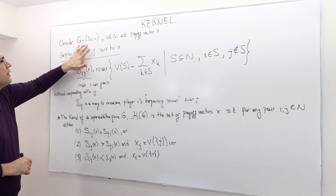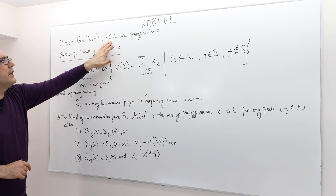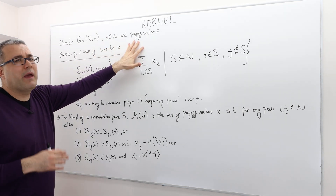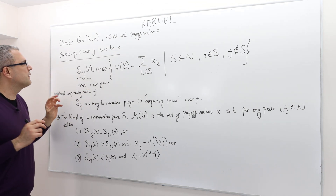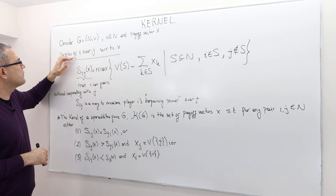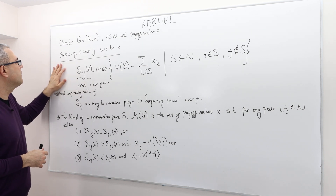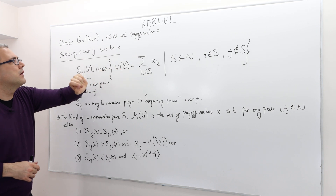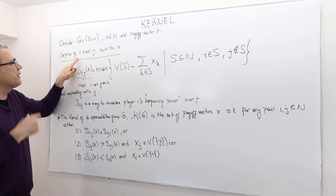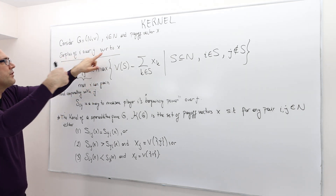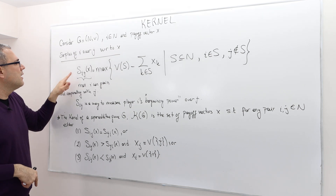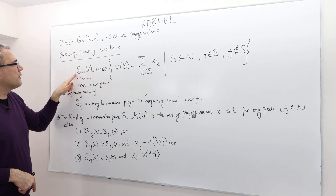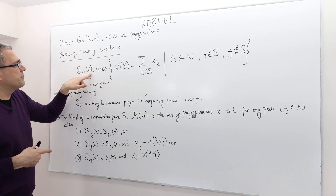Consider any coalitional game G and take any player i from the set of players N and a payoff vector x. We're going to define a new concept — a surplus — the surplus of player i over player j with respect to x. We denote it by s subscript ij.